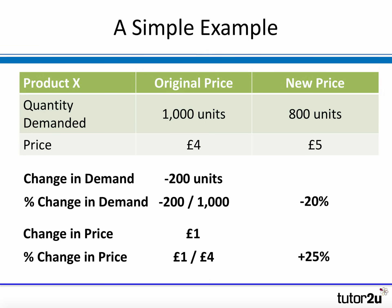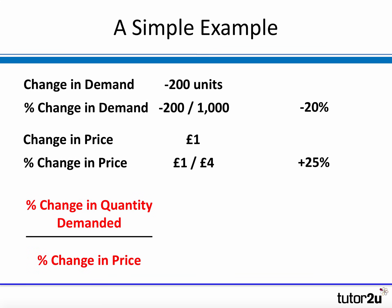What's happened to price? The price has risen by £1. Originally it was £4, so the change is £1 divided by £4 — price has increased by 25%. So we have the data to calculate PED: a fall in demand of 20% as a result of an increase in price of 25%. PED equals percentage change in quantity demanded divided by percentage change in price: 20% divided by 25% gives us 0.8, or minus 0.8 if you include the negative. The PED is 0.8.